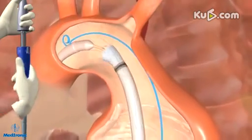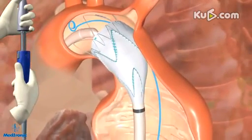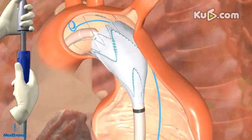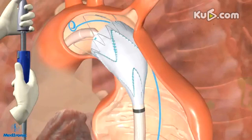Deploy the proximal end of the Talent Thoracic StentGraft by holding the delivery system stationary with one hand on the front of the handle and slowly withdrawing the graft cover with the other hand by rotating the external slider counterclockwise. Withdraw the graft cover until the proximal bare spring and the next covered spring have been deployed, making sure that only the first two springs are deployed before verifying the position. Perform angiography to verify the position of the stent graft in relation to the desired location.